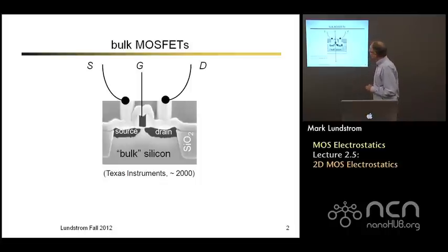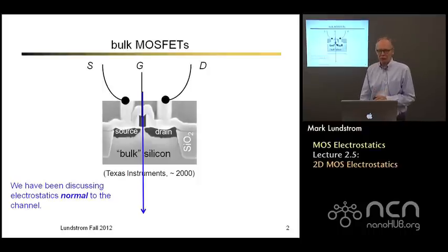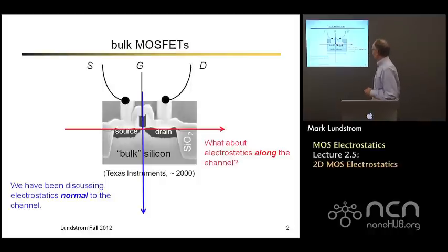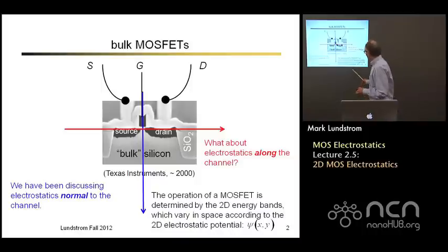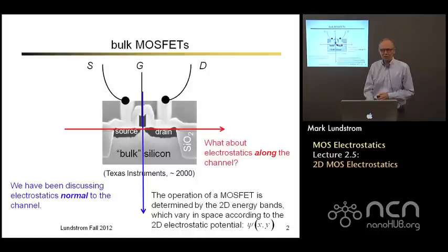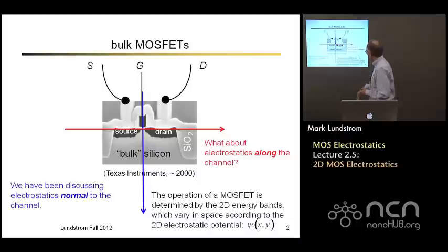This is our TEM of a bulk MOSFET and we've been discussing for bulk MOSFETs and for SOI MOSFETs the electrostatics in the direction normal to the channel. But these are two dimensional devices, or even three dimensional if we think about the dimension coming out of the page. So our goal in this lecture is to talk about electrostatics in the other direction. In general this is a complicated 2D problem where the potential is varying in the whole two dimensional cross section and we can only determine that potential by numerically solving a Poisson equation. What we're going to try to do is to bypass that and get some simple physical insight into how we think about two dimensional electrostatics.